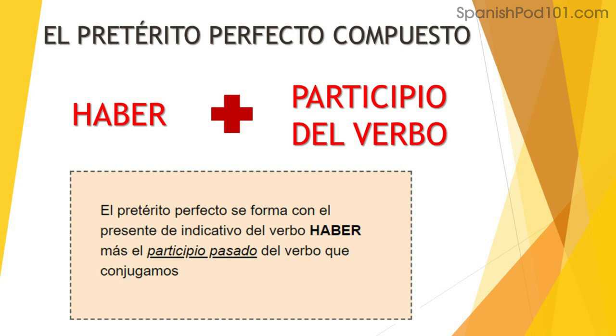¿Cómo vamos a formar este tiempo verbal en español? Necesitamos el verbo haber más el participio del verbo. El verbo haber lo vamos a conjugar en el presente del indicativo, y el participio es el participio pasado del verbo. Vamos a empezar por conjugar el verbo haber con las diferentes personas — los diferentes sujetos, los pronombres personales. How do we form this tense? We're going to take the verb haber and add the past participle of the other verb. Let's see how we conjugate haber in the present tense of the indicative mood.